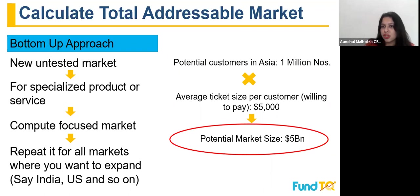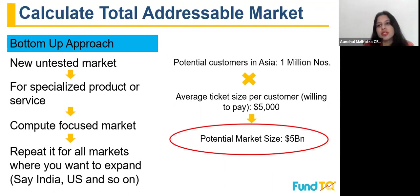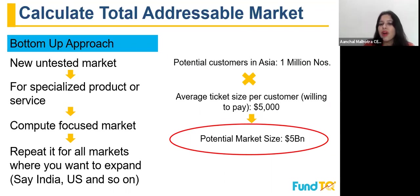If your market is Asia, like in the previous example, and the potential customers in Asia is 1 million people, and the average ticket size you can charge — also dependent on willingness to pay — is five thousand dollars per customer, then your total addressable market becomes potential customers multiplied by the average ticket size, which equals five billion dollars as the total addressable market.